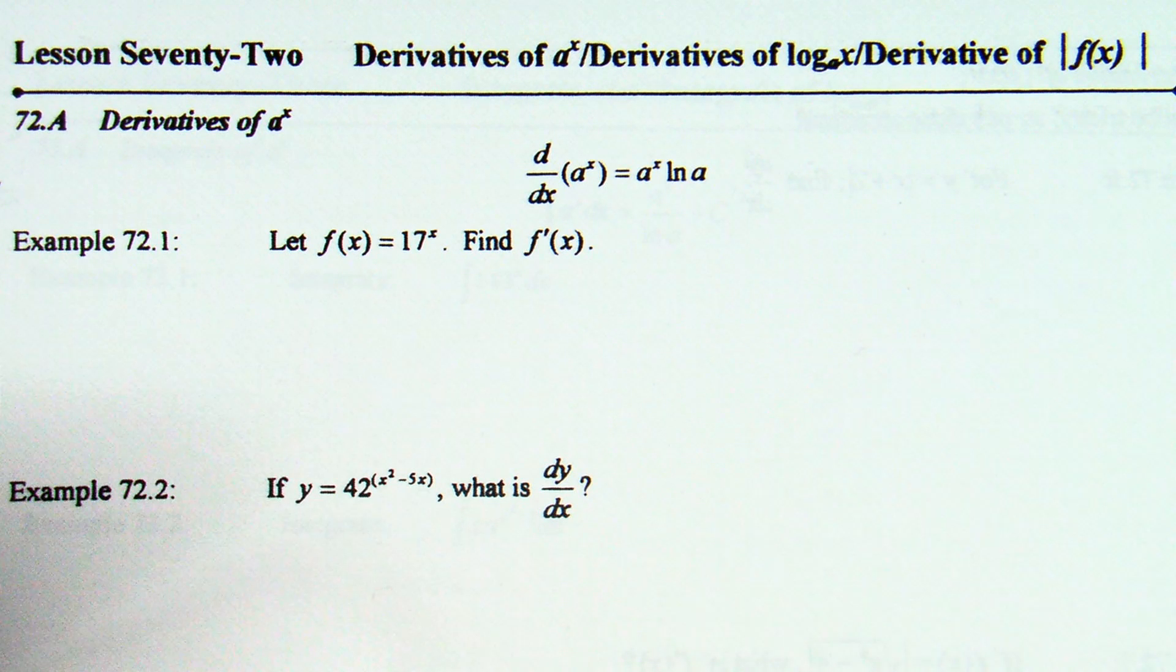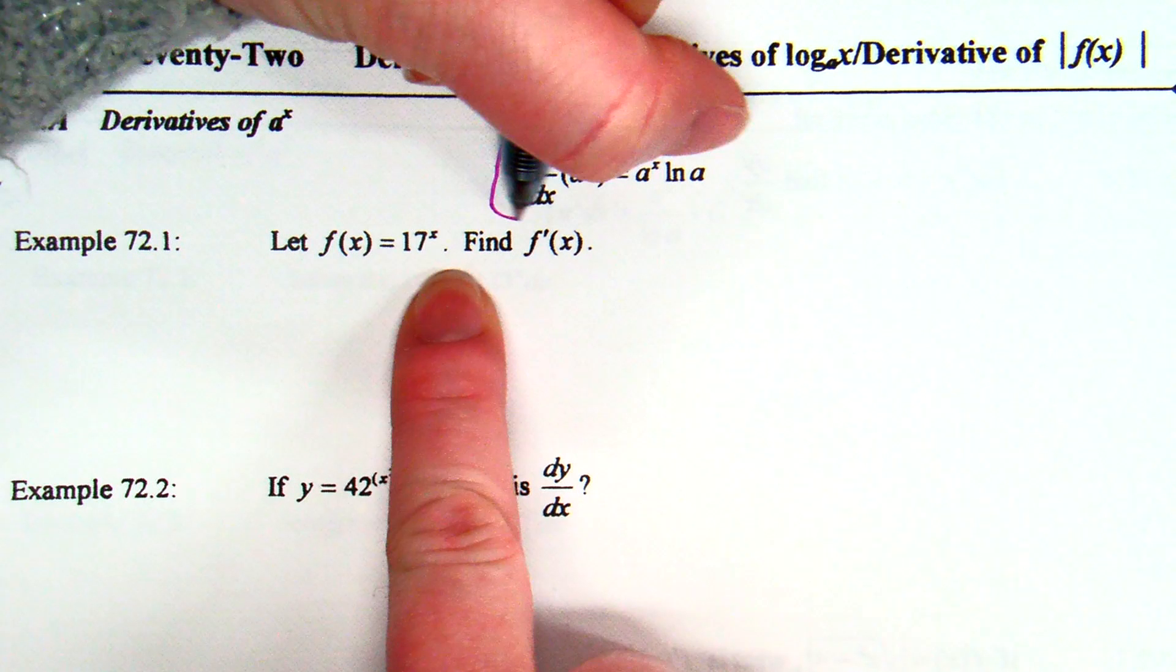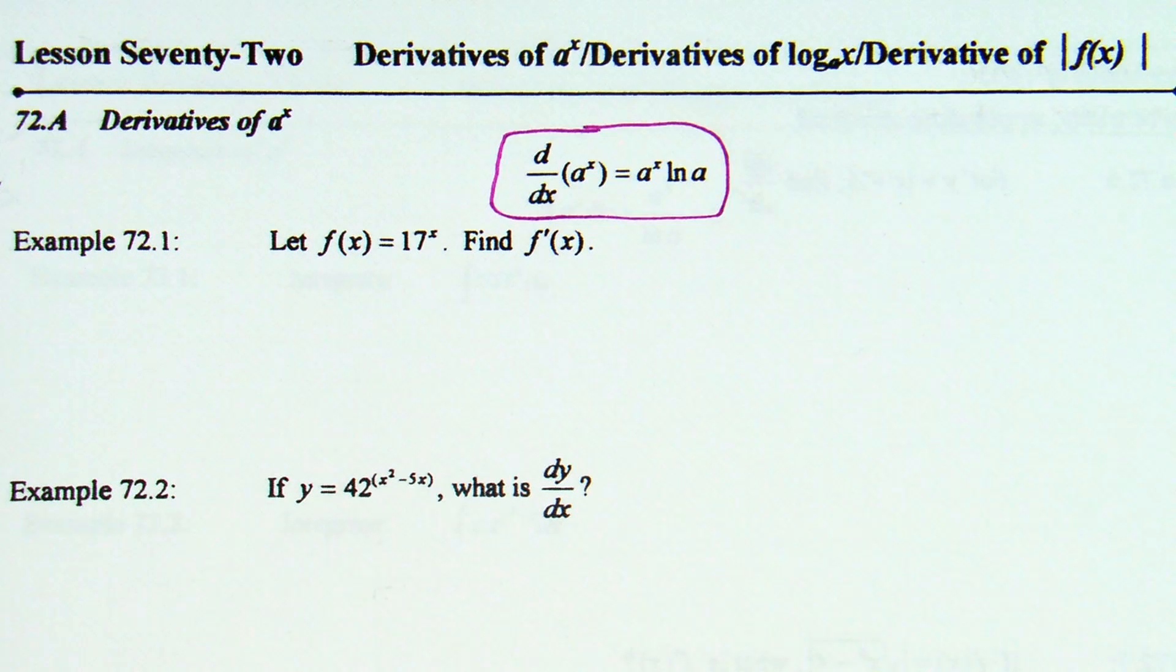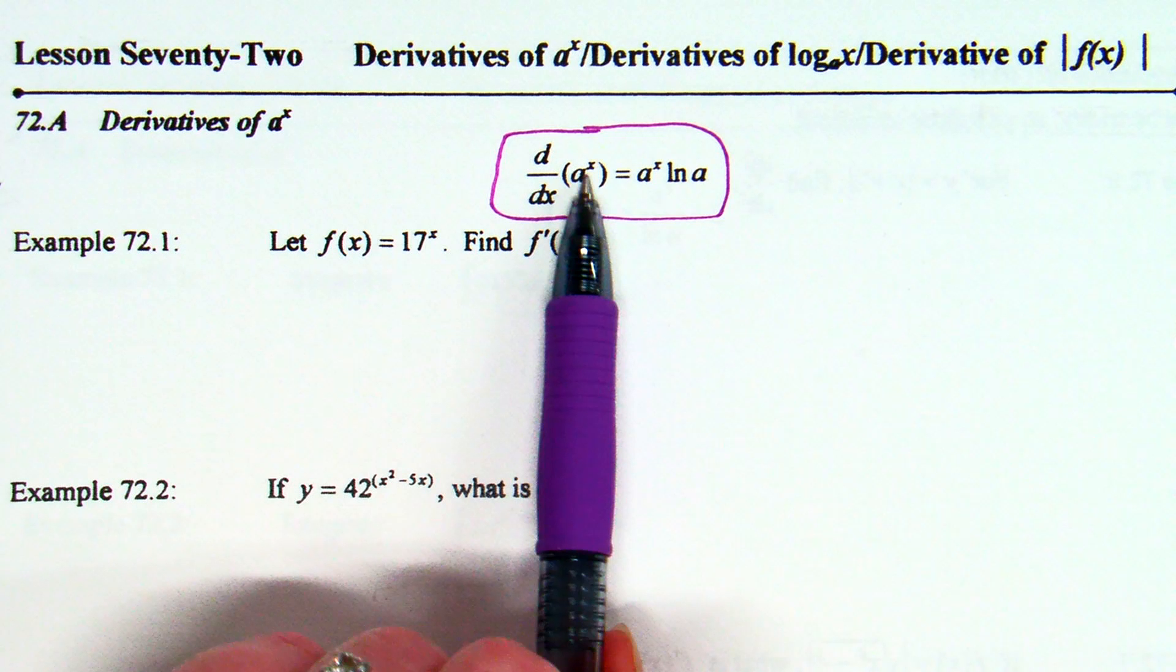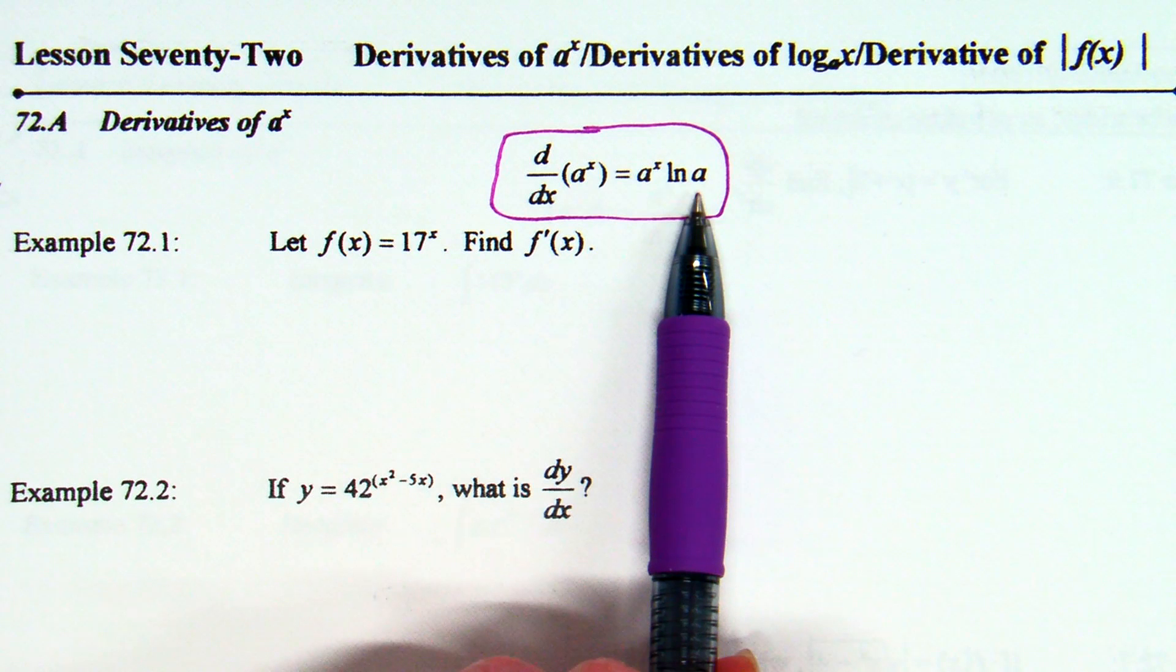Ok, first one. The derivative of a to the x. Realize a is a number. So this is a number raised to the x, kind of like 2 to the x or 3 to the x or 4 to the x. That's what we're doing the derivative of here. And the idea is if it's a derivative of a number raised to the x, then that derivative is a to the x still times the natural log of whatever the number is, a.